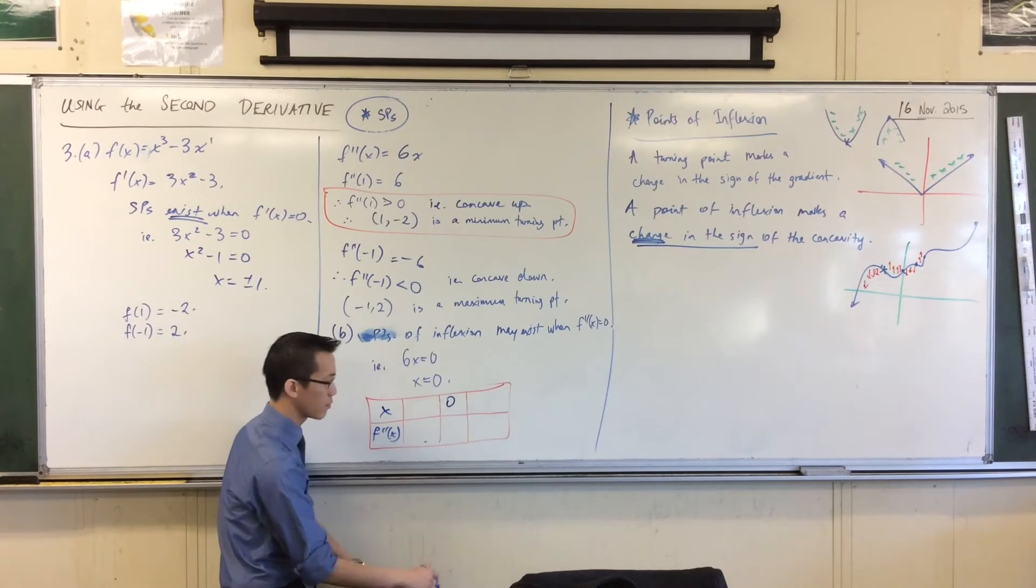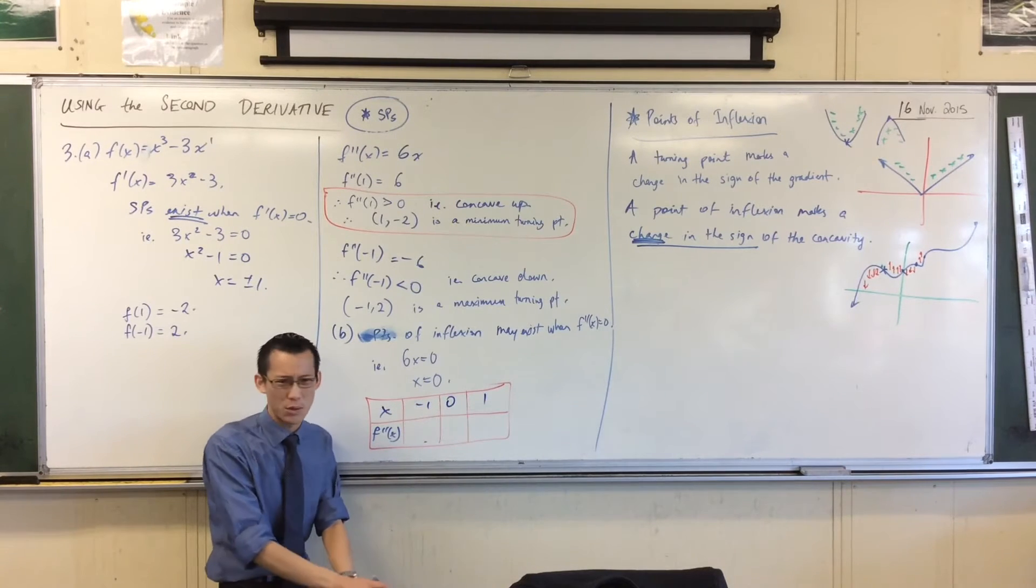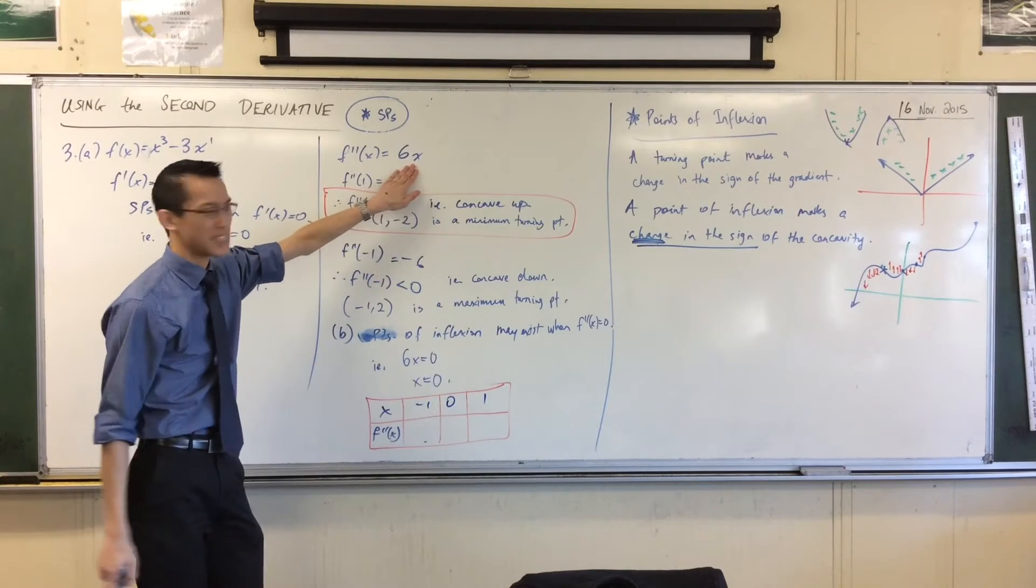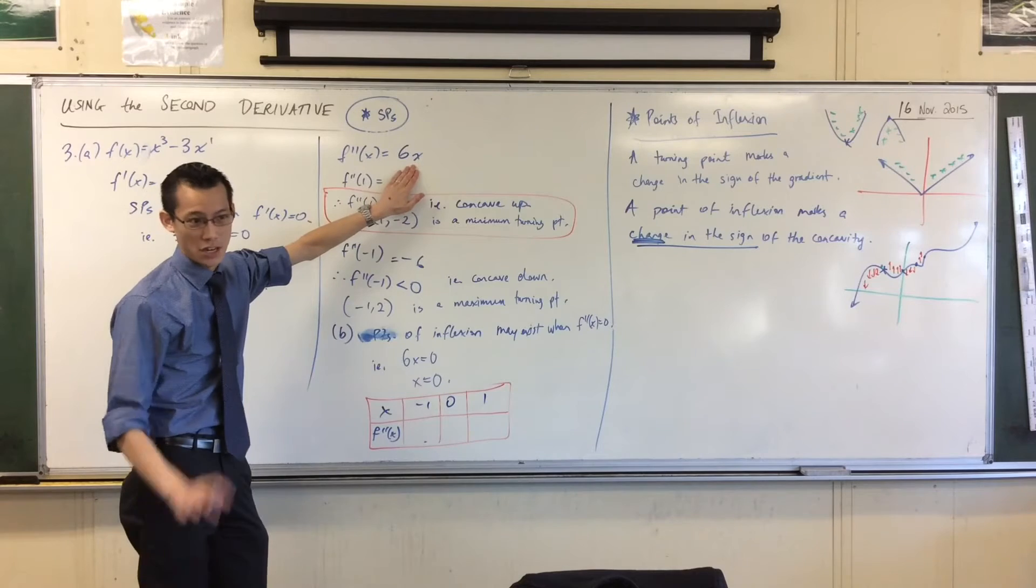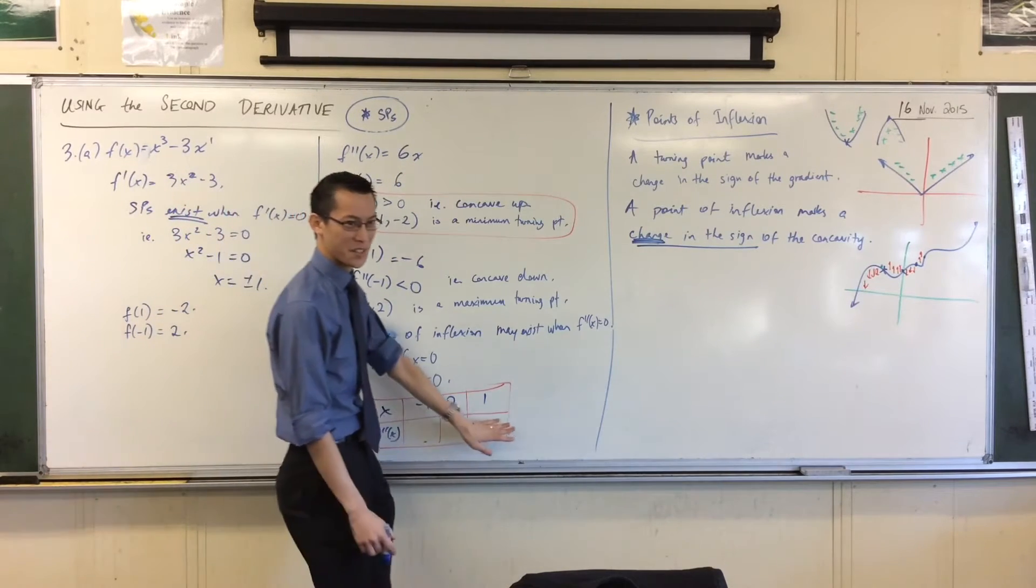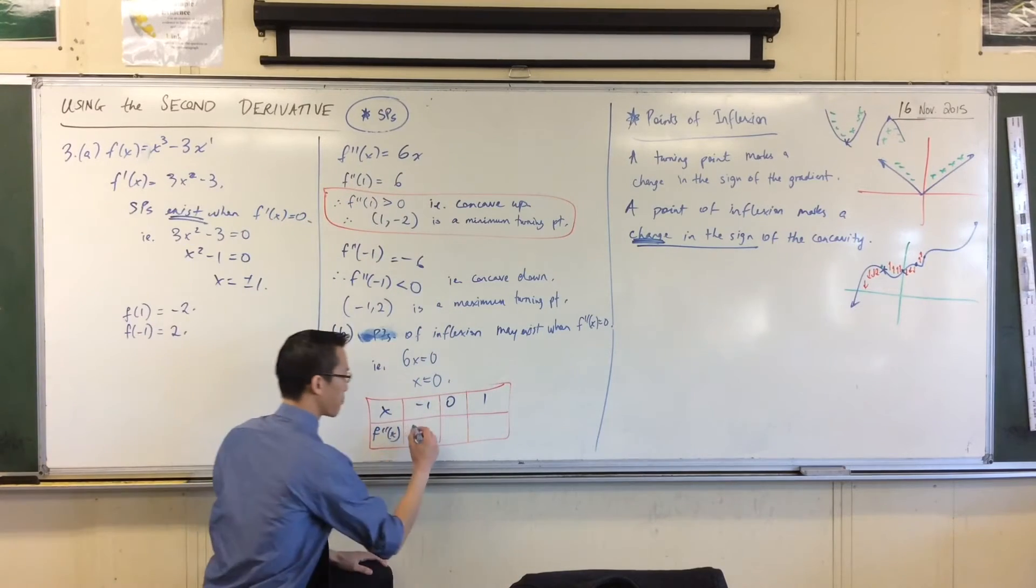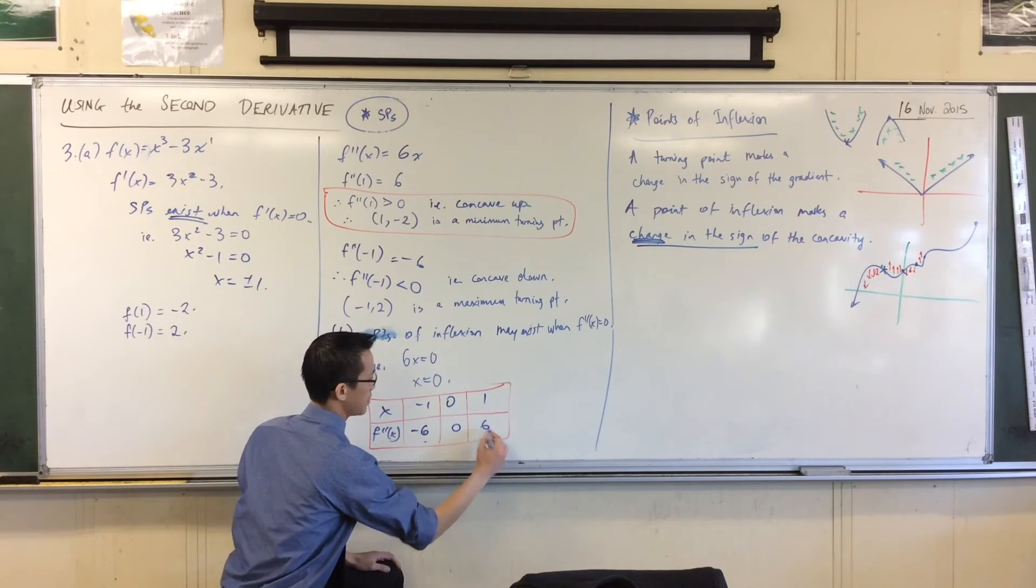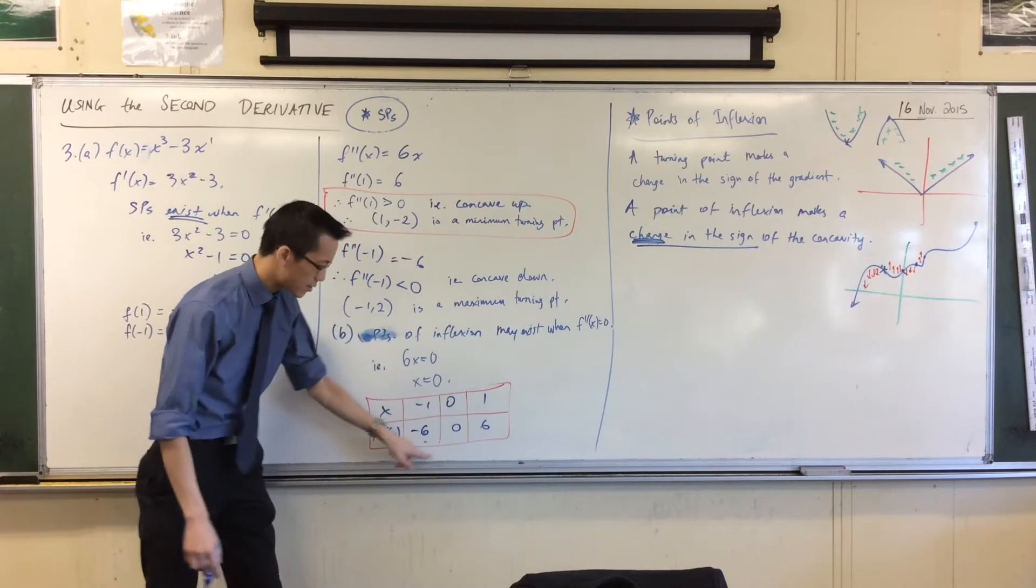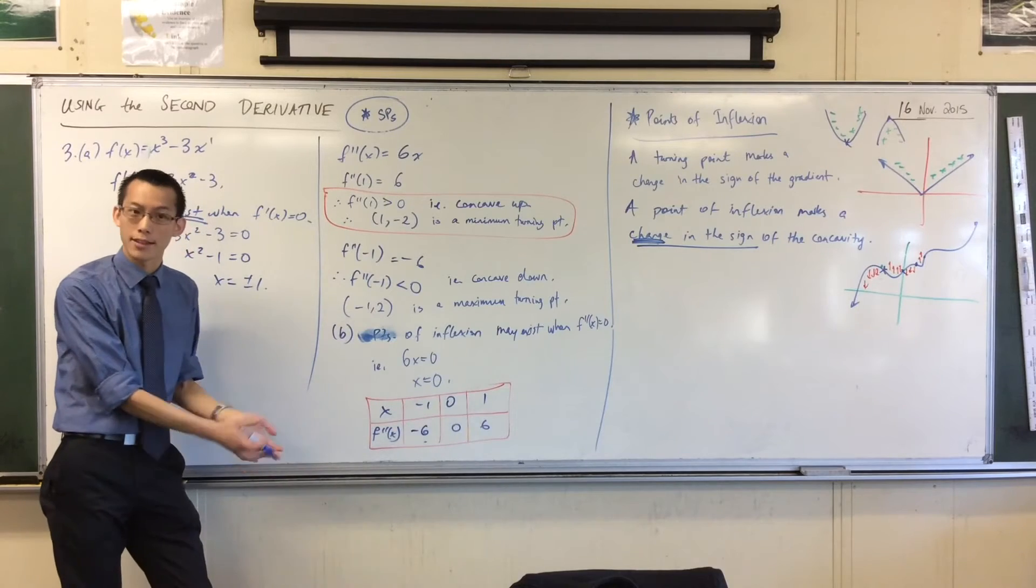So I'm testing zero. I'm going to go minus one and one. Again, we've talked about neighborhood tests. I know because of the nature of this function it's acting very predictably. So I don't need to worry about testing minus 0.1 and positive 0.1. And I know what these net values are going to be: minus six, zero and six. So I can see a change in the concavity because the sign has changed, just like it did for the first derivative. But now I'm looking for concavity rather than gradient.